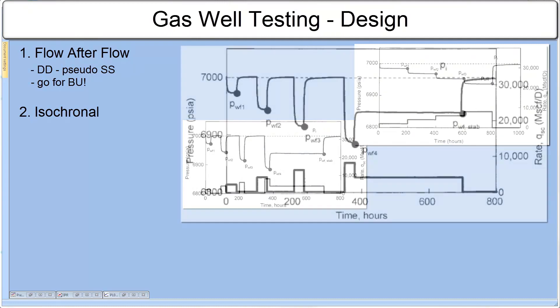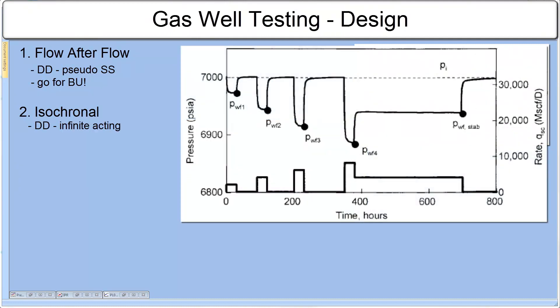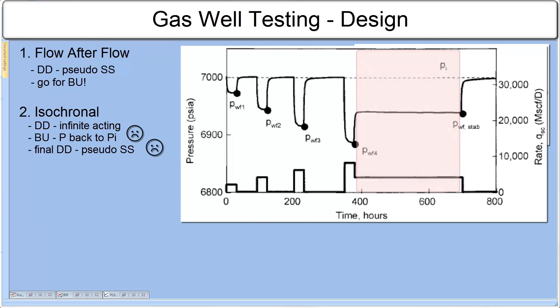With isochronal gas test, the well is again produced at 3 or 4 rates, but a shutting period is introduced between each flow. The main assumption is that the buildups last until the pressure is back to initial, which again is not feasible for low and middle permeability reservoirs. The final drawdown is necessary to extend to reach steady state.